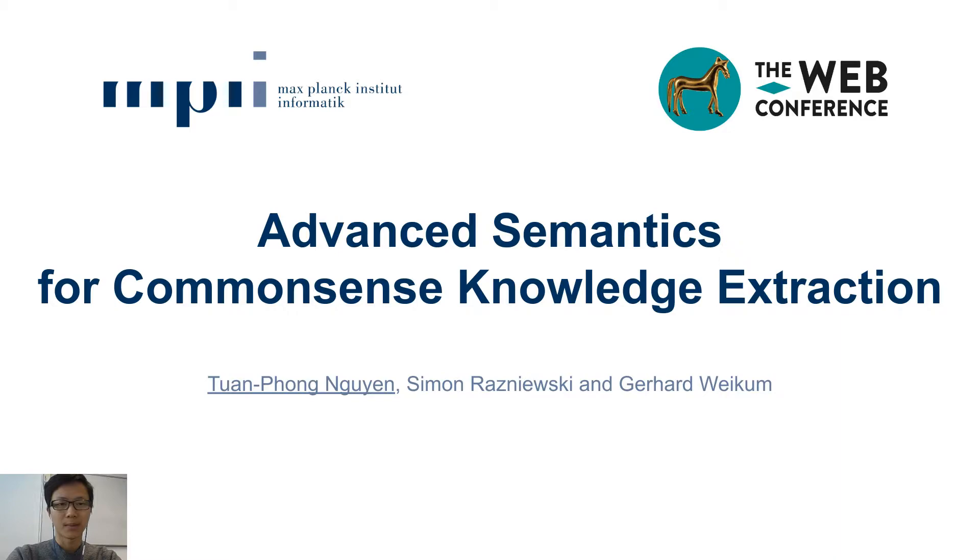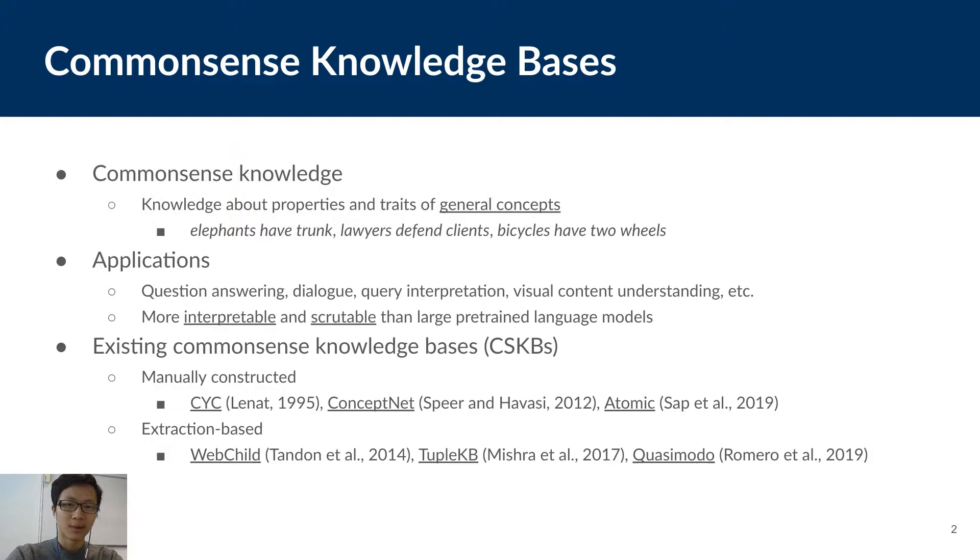In this work, we propose a methodology to automatically extract and consolidate common sense knowledge from web contents. So let's start with some definitions. First, what is common sense knowledge? Well, common sense knowledge is knowledge about properties and traits of general concepts like elephants, lawyers, bicycles.